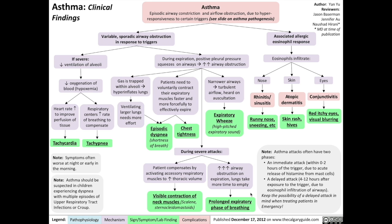Asthma is defined as a disease that involves episodic airway constriction and airflow obstruction due to hyperresponsiveness to certain triggers. Please see the slide on the pathogenesis of asthma or see the video on this topic for more details about the triggers. There are two physiological components to the disease of asthma. First, in response to triggers, there are variable sporadic airway obstruction events that occur. Also, there's an associated allergic eosinophil response.